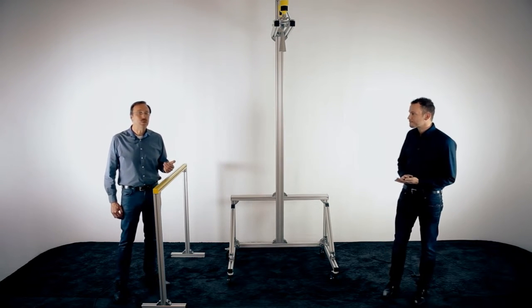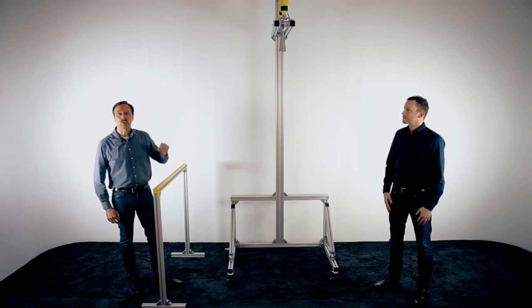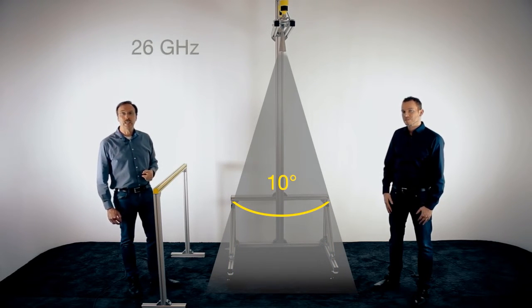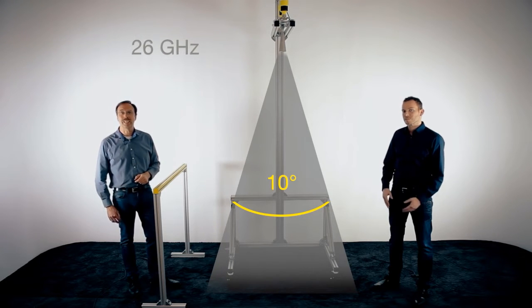To show you some details we have installed two radar sensors on top here. One is working with 26 GHz and we use a wall antenna with a focusing of approximately 10 degrees.